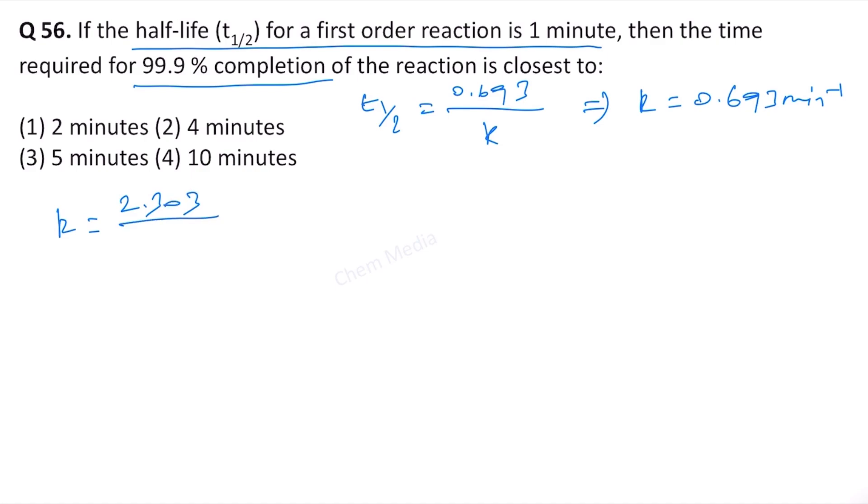We also know from integrated rate law that k is equal to 2.303 divided by t, log A0—that is the initial concentration—divided by At.